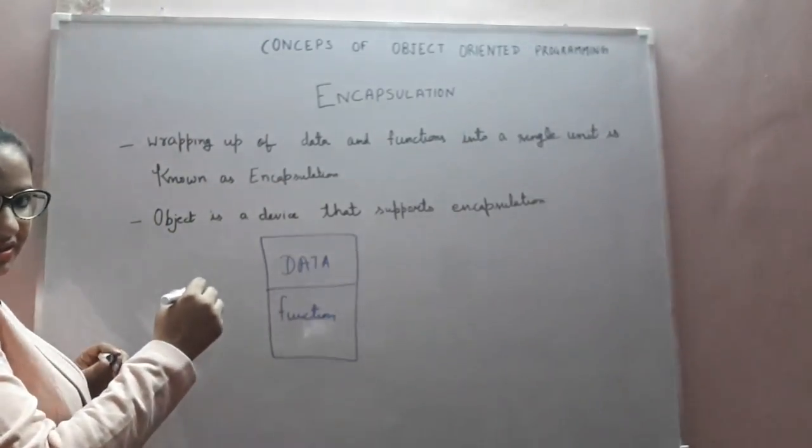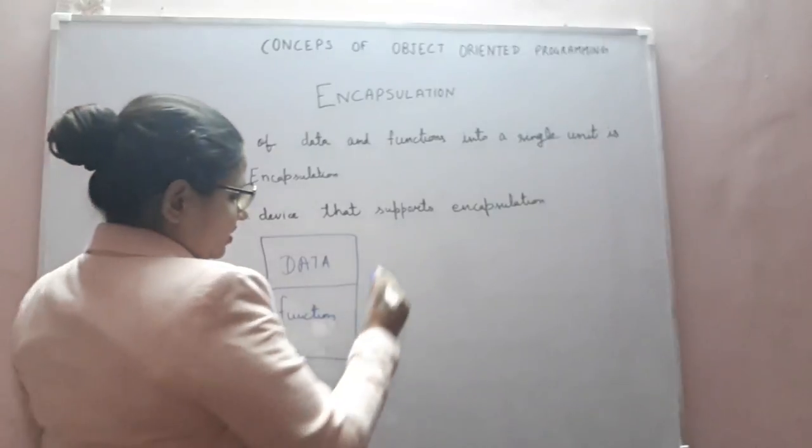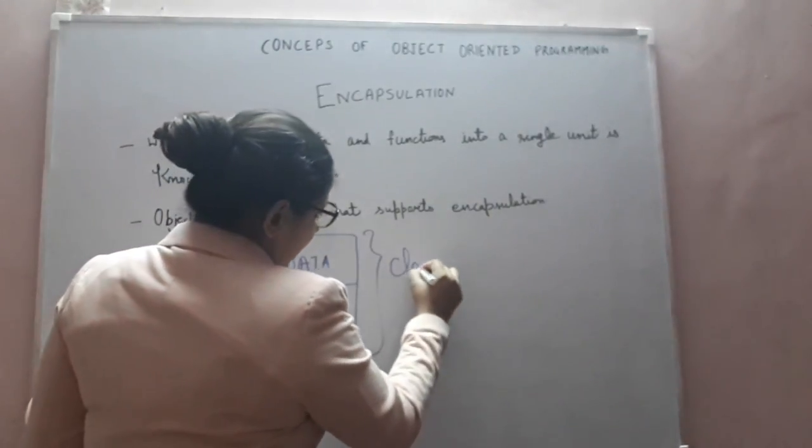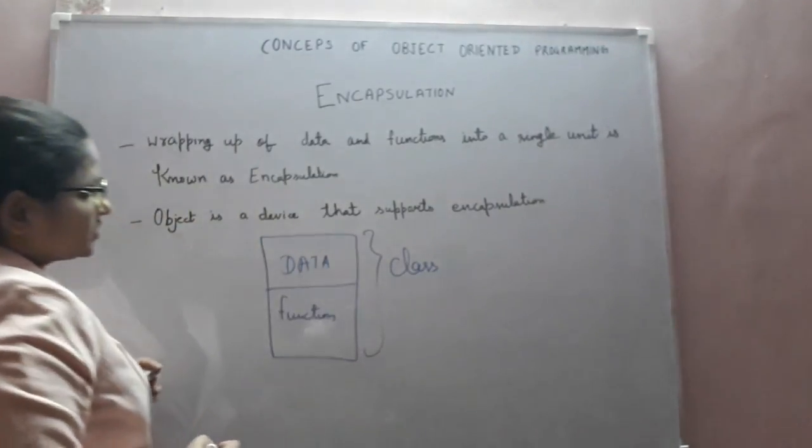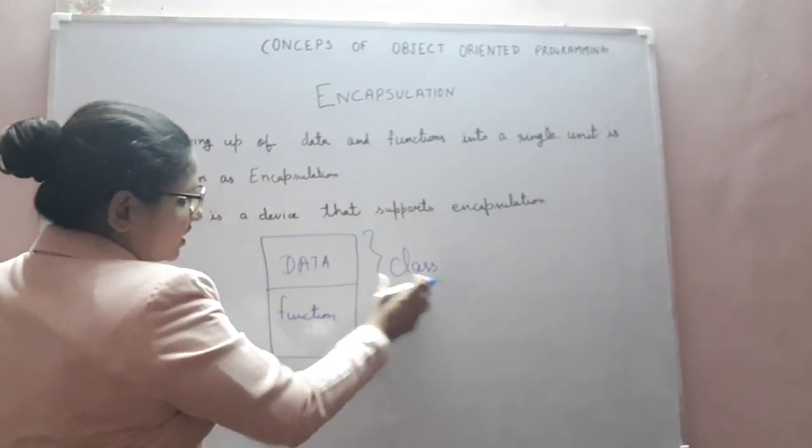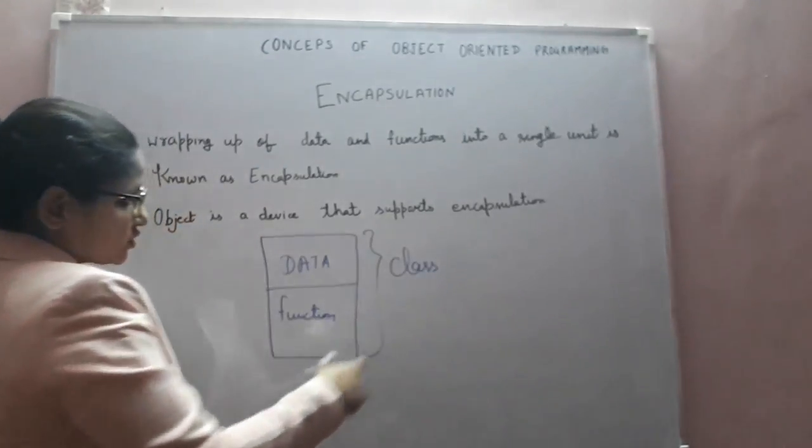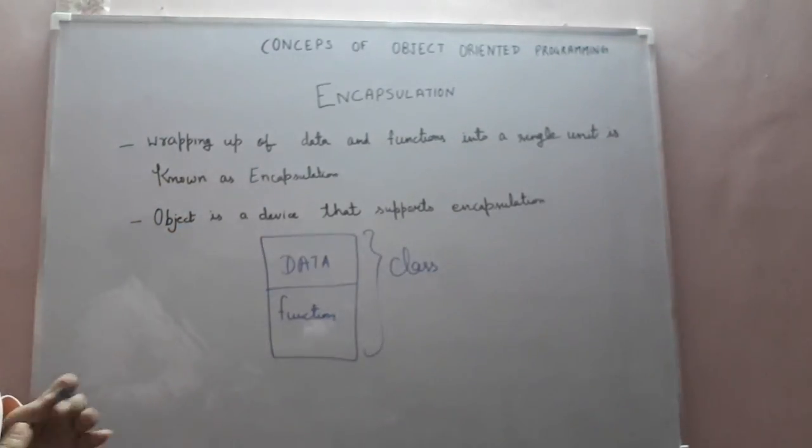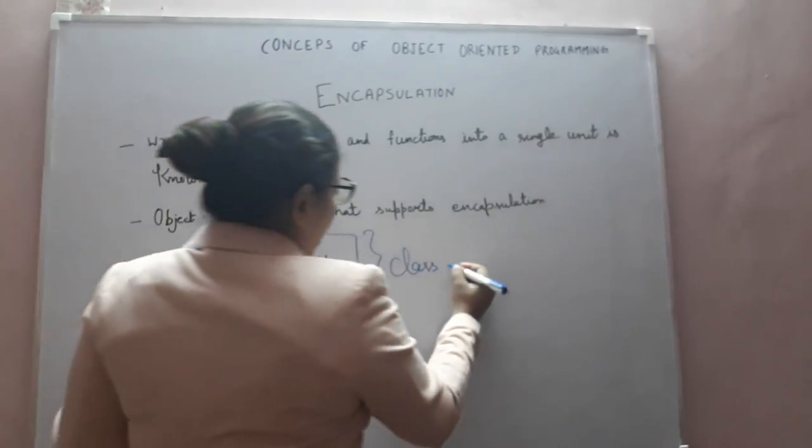...are encapsulating it in a single unit and that is known as class. So wrapping up data and function into a single unit is known as encapsulation - encapsulating data and function into a single unit. As we know, object is...